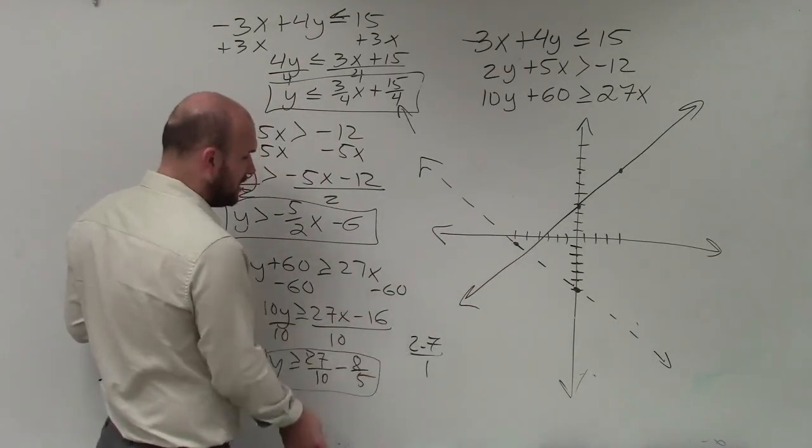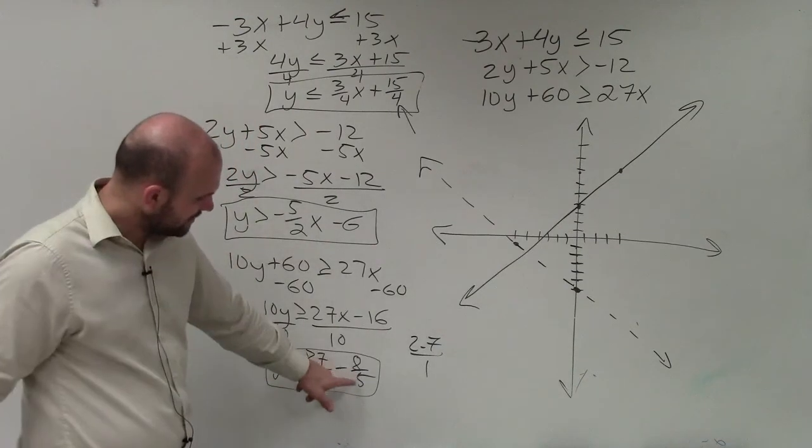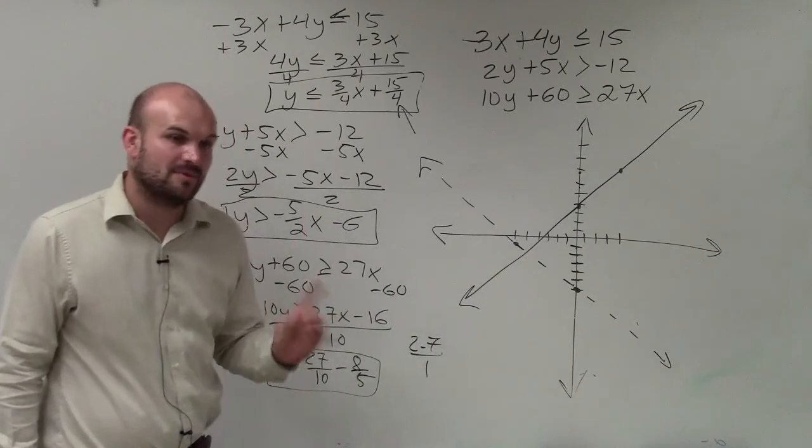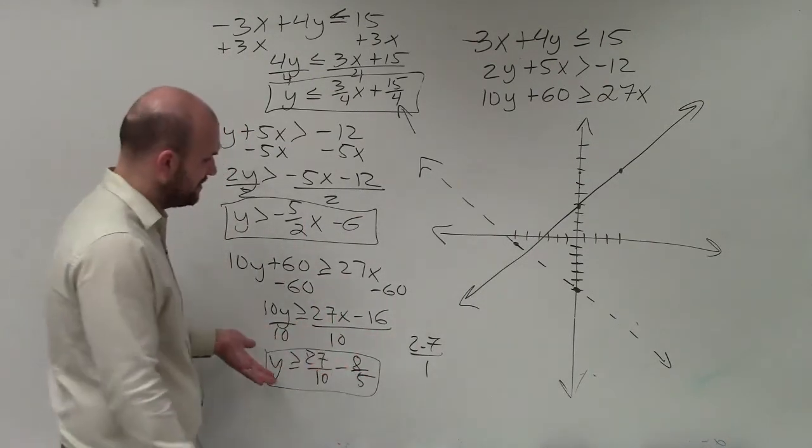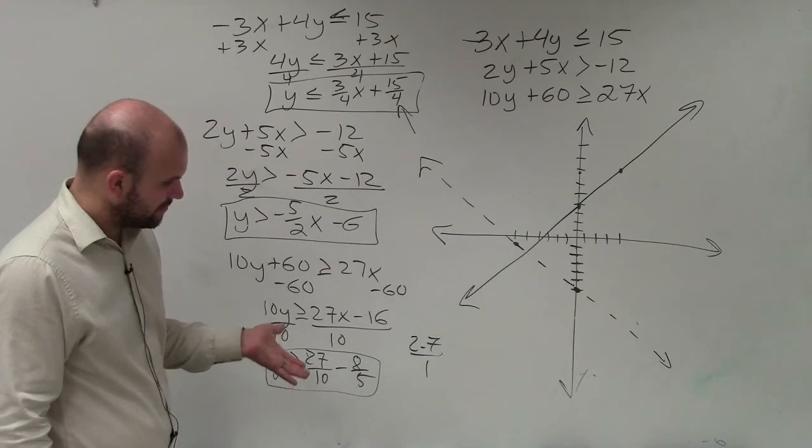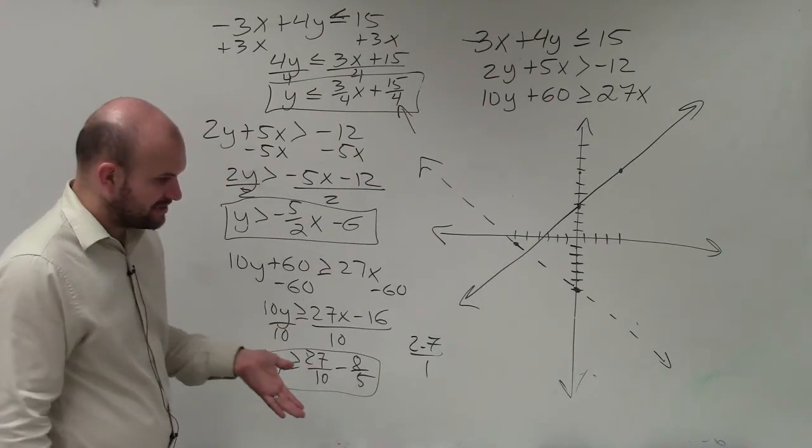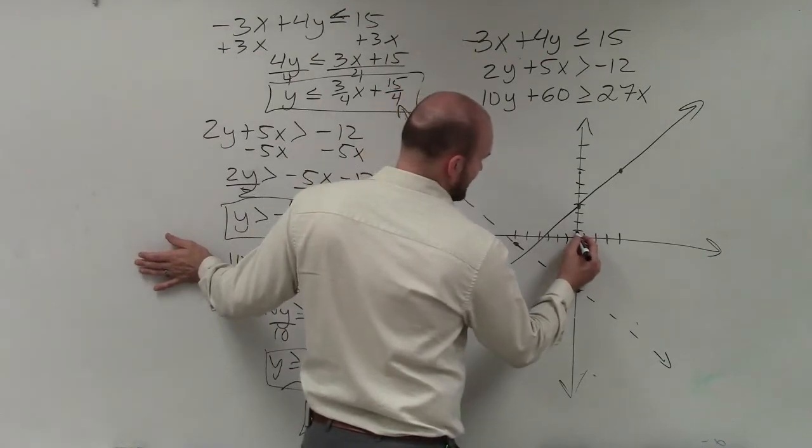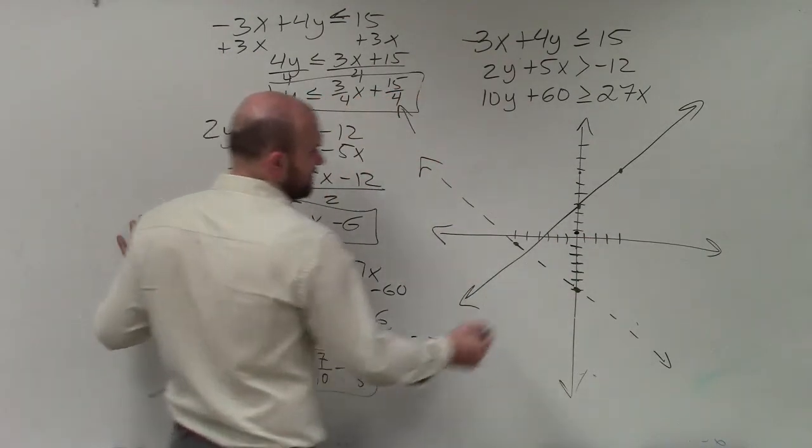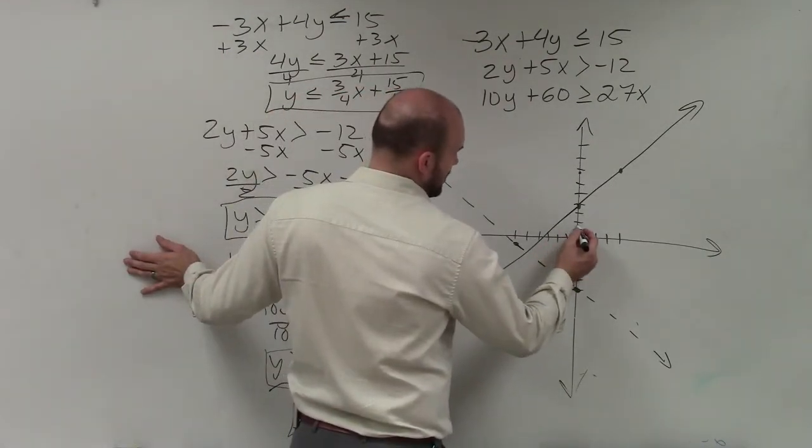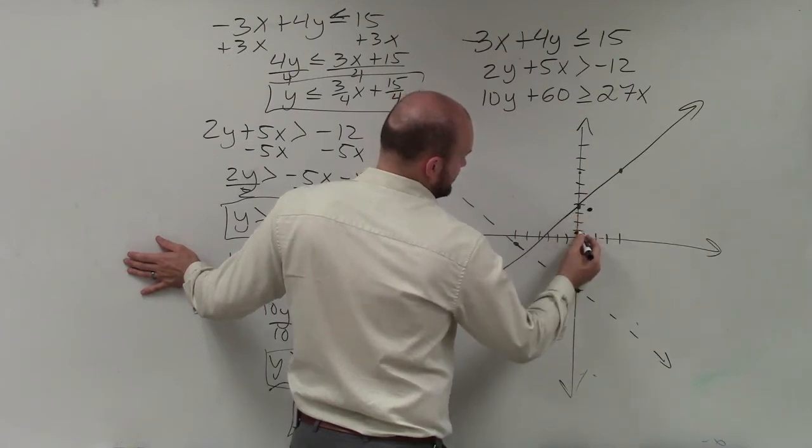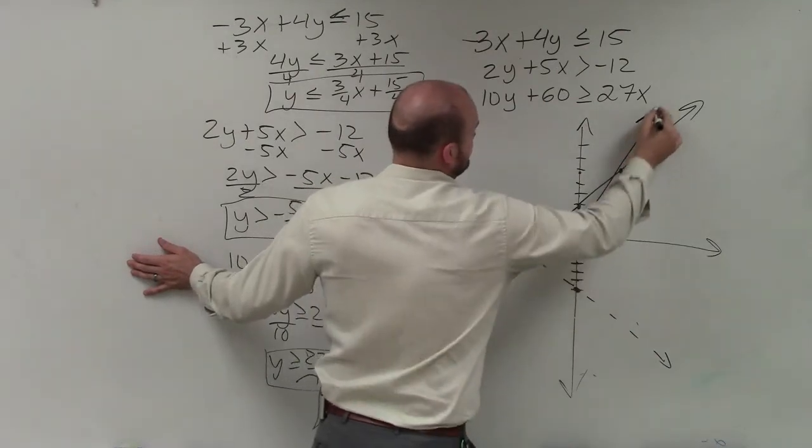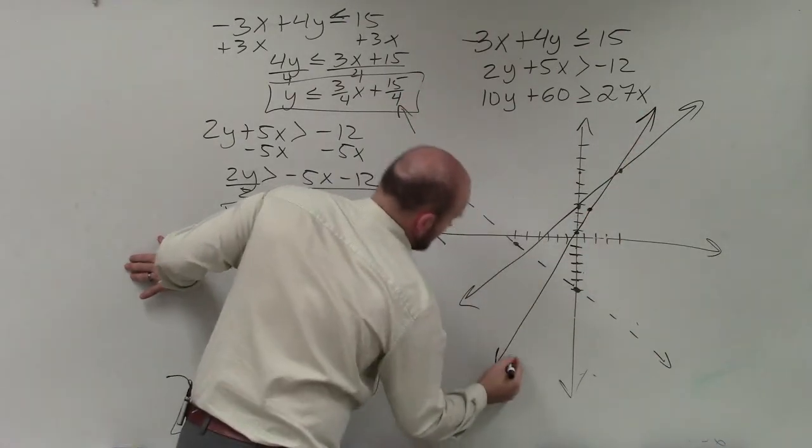So if I change the slope instead of 27 over 10 to 2.7 over 1, and then this is going to be, 5 does not evenly go into 8. It goes in there one time with 3 left over, which would be 3 fifths. And that's going to be 0.6. So that's going to be negative 1.6 would be my y-intercept. And then I can just follow up 2.7. So up 2.7 over 1. Just trying to estimate here. And my line is going to be solid.